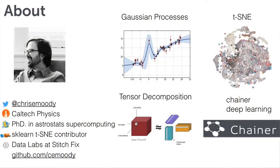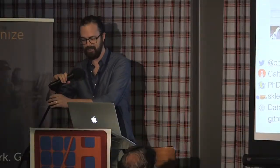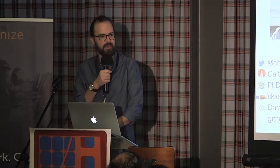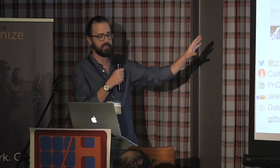Before I start, I want to talk a little bit about myself. I'm Chris Moody — that's my Twitter handle. I talk a lot more about this stuff. I also really like things that aren't Word2Vec and LDA, like Gaussian Processes. I contributed t-SNE to the latest version of scikit-learn. I'm also active in the deep learning community — a contributor to the Chainer framework. Right now I'm at Data Labs at Stitch Fix, which is the most awesome job ever because I get to work on all this stuff in the context of fashion.